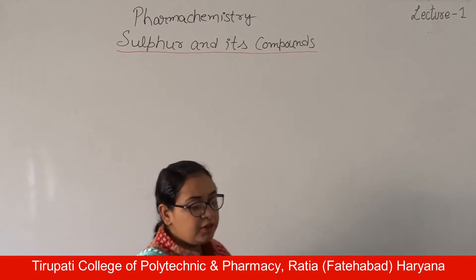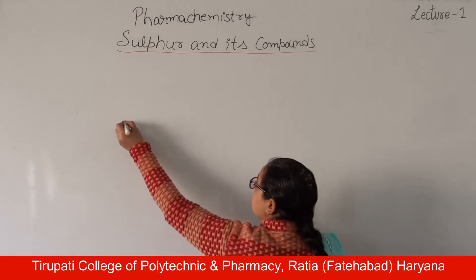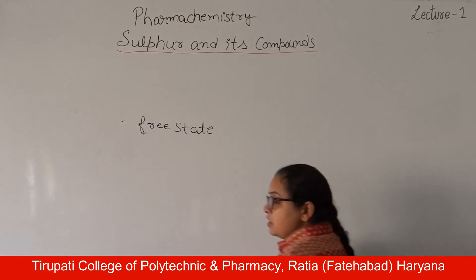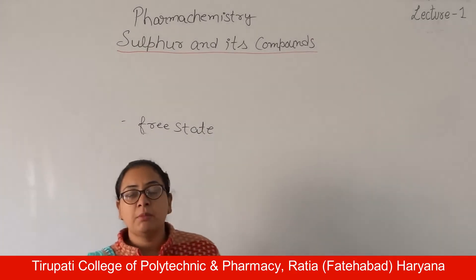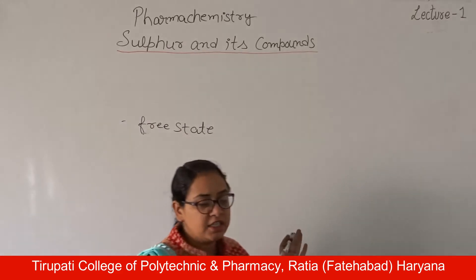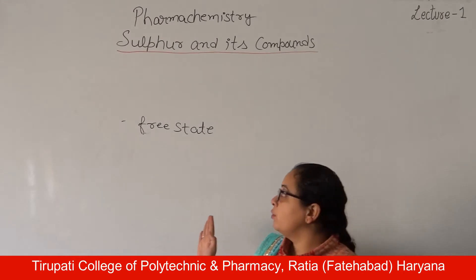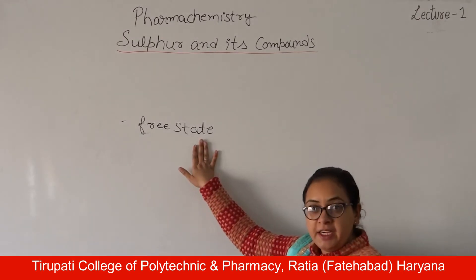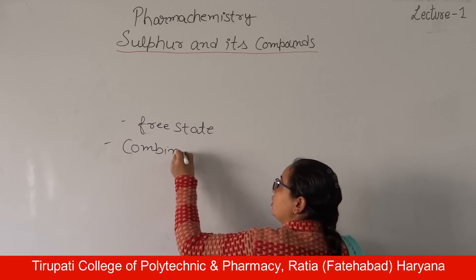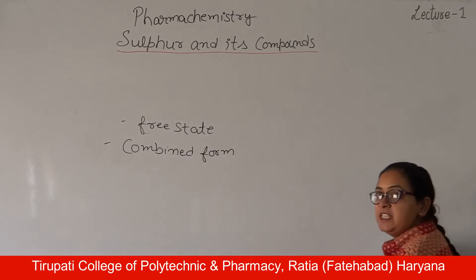First, sulphur is available in a free state as well as in a combined state. In the combined state, sulphur is abundant in the form of sulphides and sulphates.